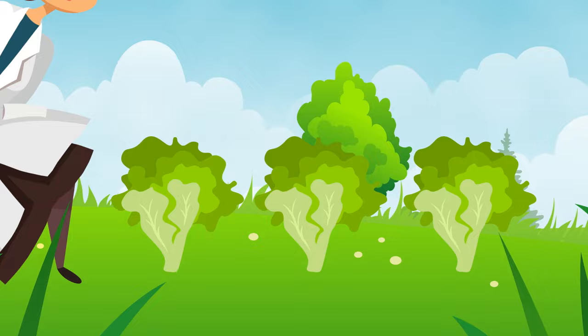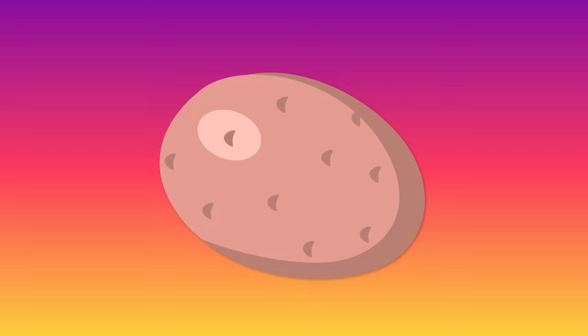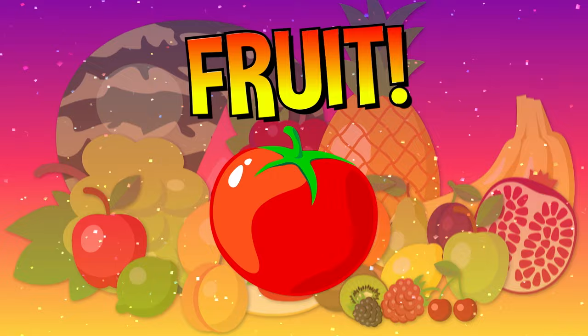Scientifically, a vegetable is any part of a plant you can eat that isn't a fruit. That means leaves like lettuce, cabbage, spinach, and kale, stems like celery, asparagus, and rhubarb, flowers like broccoli, and all the stuff underground like carrots, beets, onions, and potatoes are all vegetables. So there you have it. According to science, tomatoes are a fruit.